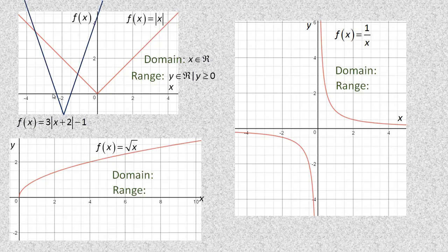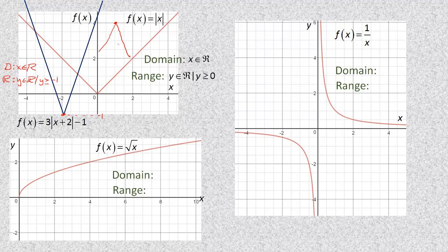Here's another absolute value function. The domain is still all real numbers. For the range, the vertex of this graph has a y value of negative 1, so the restriction is y ≥ -1. If you had an absolute value that opened downward with a highest point at 4, then the restriction would be y ≤ 4. So it depends on whether it opens up or opens down which way the restriction goes.